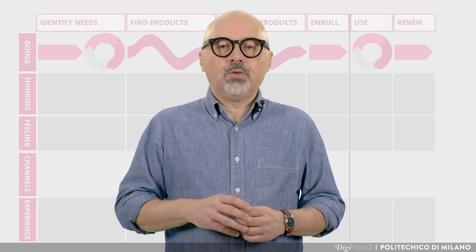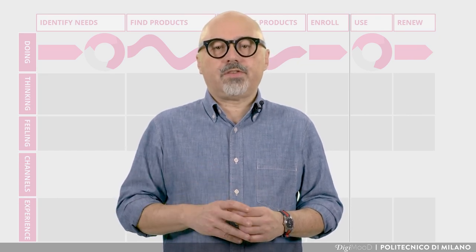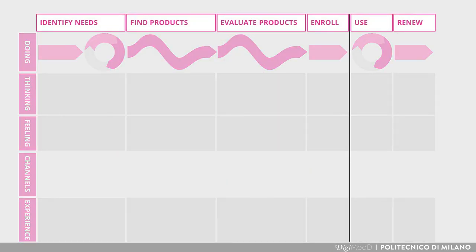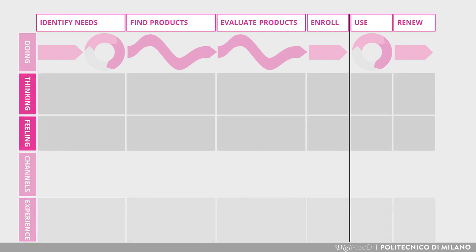To conclude, here is a template for the experience map that represents the different phases of the customer journey, the different nature of the activities symbolized by circles and arrows, a description of the different channels used, the nature of the experience delivered for every step and channel, and finally, a notation on feelings and thoughts of the persona while passing through the different steps.